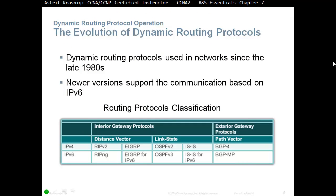The evolution of dynamic routing protocols. There has been a dynamic routing protocol since the late 1980s. The newer versions support communication based on IPv6. There are two types of routing protocols: interior gateway protocols, used inside our company, and exterior gateway protocols, used when there is communication between two different companies.